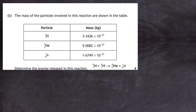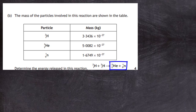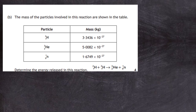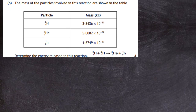Question 8b. The mass of the particles involved in this reaction are shown in the table — the particles on the left hand side and their corresponding masses in kilograms on the right hand side of the table. For four marks we're asked to determine the energy released in this reaction. To do this we must find the total mass on the left hand side of that nuclear reaction and compare it to the total mass on the right hand side.